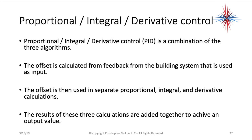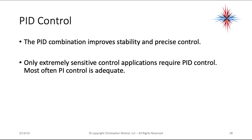The solution is PID control — a combination of proportional, integral, and derivative algorithms. The offset is calculated from feedback from the building system and used as an input. The offset is then used in separate proportional, integral, and derivative calculations, and the results are added together to achieve an output value. PID improves stability and gives more precise control. Only extremely sensitive control applications require PID; most often, PI control is adequate.